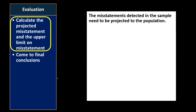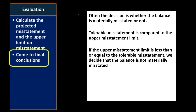In the evaluation phase, we calculate the projected misstatement and the upper limit on misstatement. Misstatements detected in the sample are projected to the total population. The conclusion is often whether the balance — such as accounts receivable or inventory — is materially misstated or not.